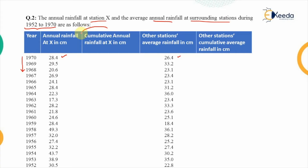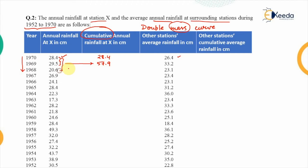We will use the double mass curve technique, which requires taking cumulative (accumulated) values of rainfall. For the first year the value is taken as given; for the next year we add up two values to get 57.9; for the following year three values are added to get 78.5. Continuing this way: 105.4, and so on up to the year of change, which is 1960.